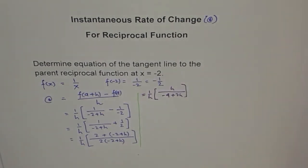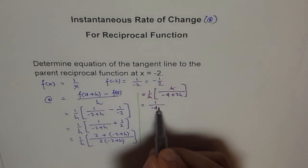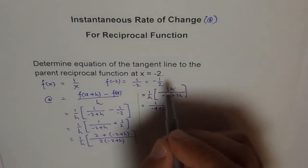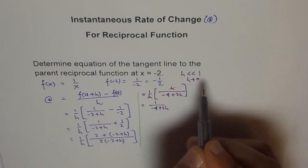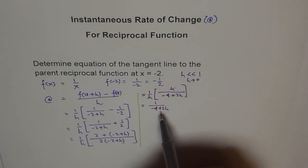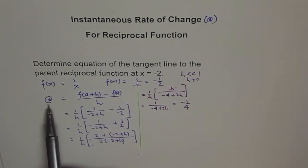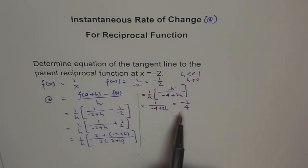We can cancel h in the numerator and denominator. The expression simplifies to 1 over negative 4 plus 2h. Since h is approaching 0 — h is a very small increment representing how close two points are — as h approaches 0, the secant approaches the tangent line. So setting h to 0, we get the instantaneous rate of change equals negative 1 over 4, which is the slope of the tangent line at x equals minus 2.